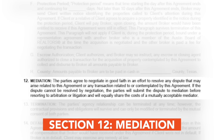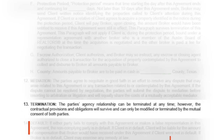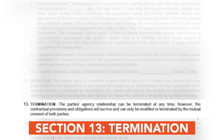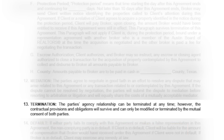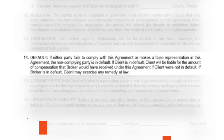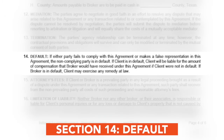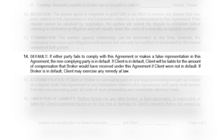The twelfth section covers Mediation and shares how the parties will handle any dispute. The thirteenth section covers Termination — it shares how the agreement can end and what would still survive a termination. The fourteenth section covers Default: if either side fails to comply with the agreement, they are in default, and this section details what happens in that case.